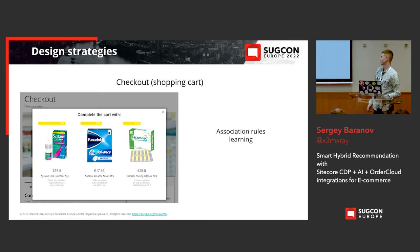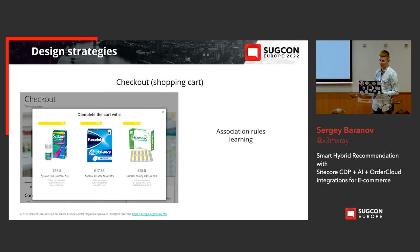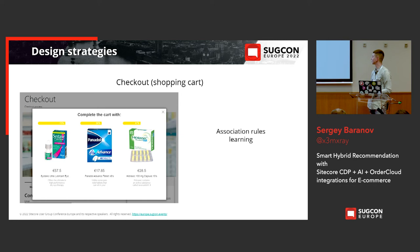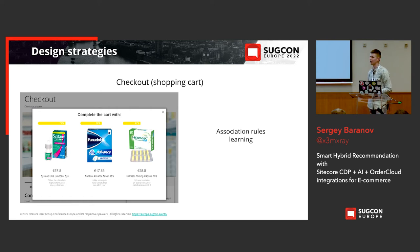The checkout page is prime time for upselling — it's a perfect moment to offer complementary items to complete the customer's checkout. Association rules learning is the best recommendation choice for this page. And a fun fact: up to 25% of customers who click on these recommendations actually order the recommended item.